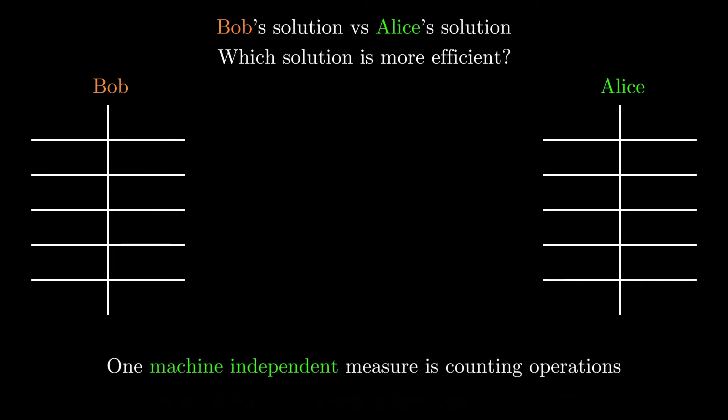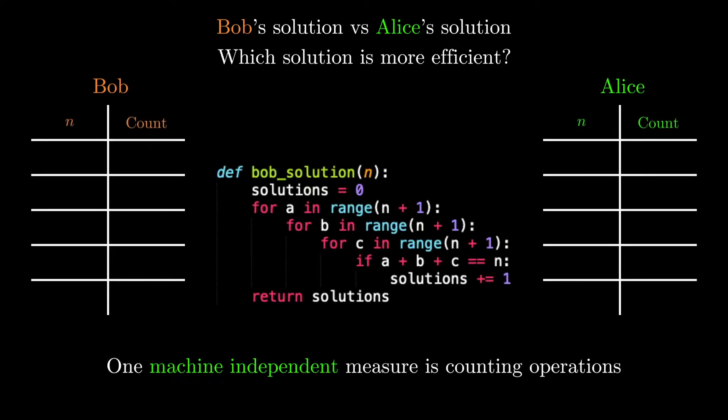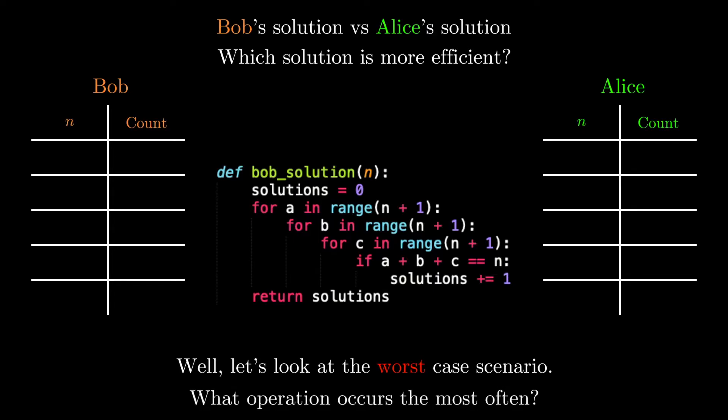So another option is we could actually try to count some sort of operation in the program and see how that changes as the input increases. We want to focus on the worst case scenario for good representation. For example, one thing we could count is the number of times we check the respective if statement in each program.